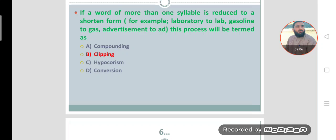If a word of more than one syllable is reduced to a shortened form, for example laboratory to lab, gasoline to gas, advertisement to ad, this process will be termed as clipping. Option B is the correct option, clipping.